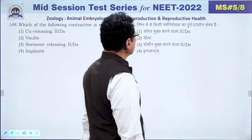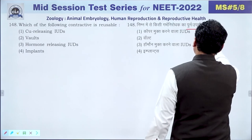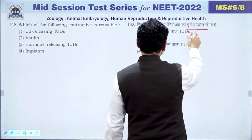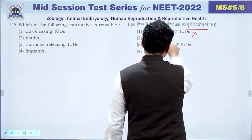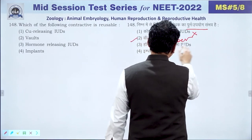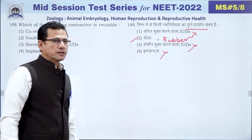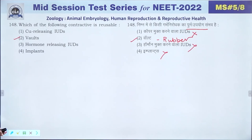Question 148: Among contraceptives, the vault (made of rubber) can be reused. Copper IUDs cannot be reused. Implants cannot be reused. The vault's reuse is possible because it is made of rubber. The answer is 2.